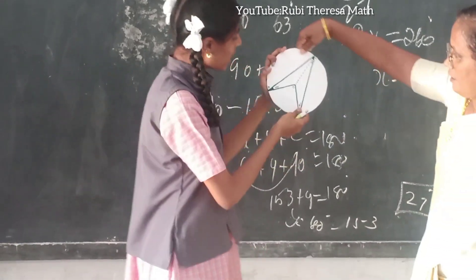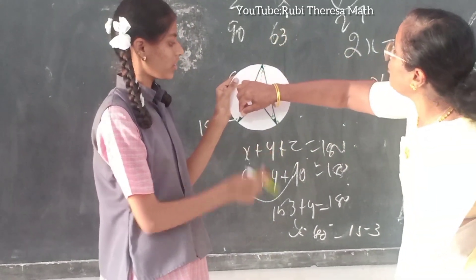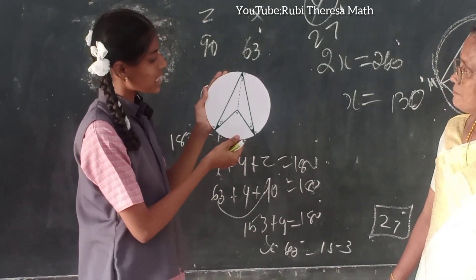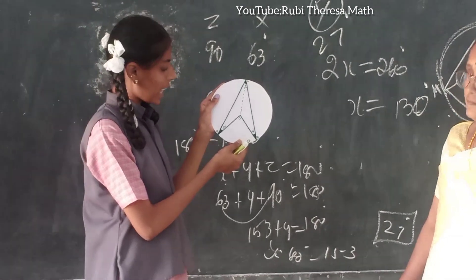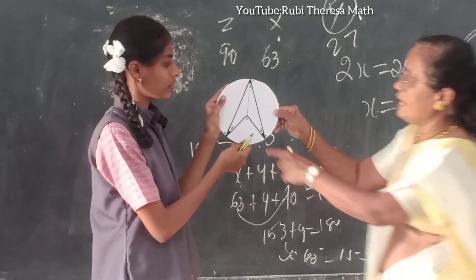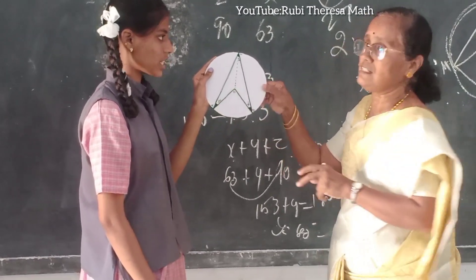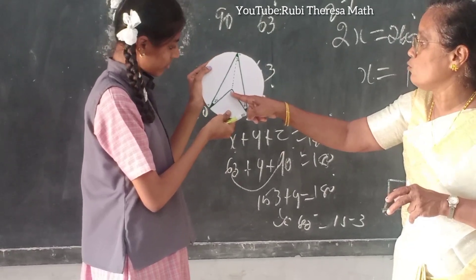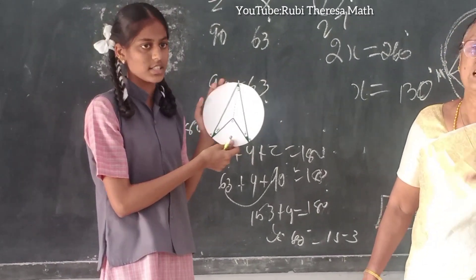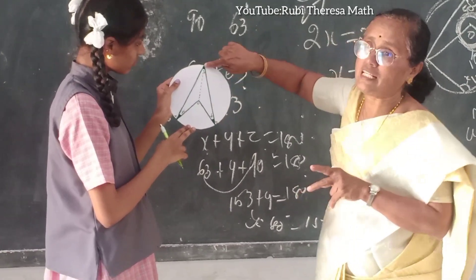In this sum they told us to find angles A, C, and B — that is X. We have to find the X value. When you look at the circle you can see there are three radii. Radius is the line joining any point on the circumference to the centre. OA is a radius, OB is a radius, and OC is a radius.